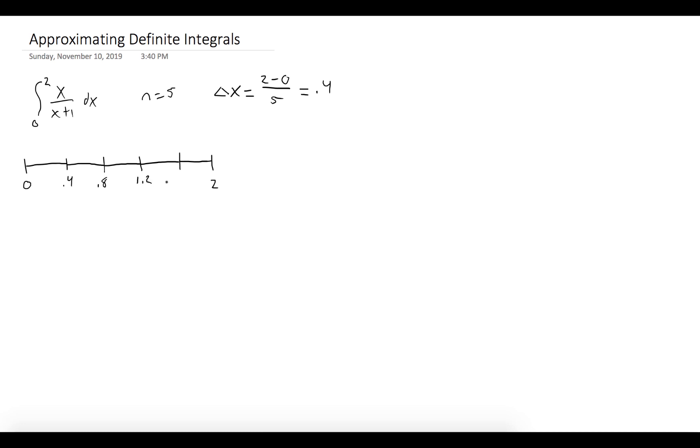So our endpoints are 0.4, 0.8, 1.2, and 1.6. We get the midpoints of each subinterval: 0.2, 0.6, 1, 1.4, and 1.8.